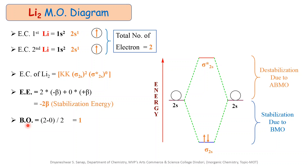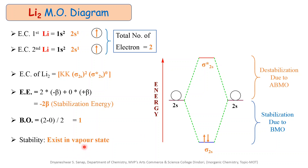Next is the calculation of bond order, denoted by BO. Bond order is calculated using the formula: (number of electrons in bonding molecular orbital − number of electrons in anti-bonding molecular orbital) / 2. Putting in the values: (2 − 0) / 2 = 1. This means there is formation of 1 bond in the Li2 molecule. The Li2 molecule is stable in the vapor state. Regarding magnetic properties, since there are no unpaired electrons in any molecular orbital, Li2 is diamagnetic in nature.